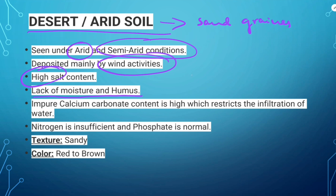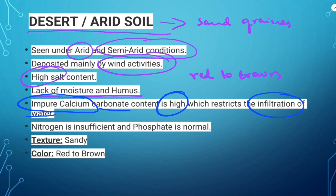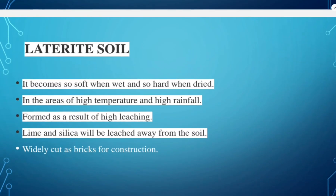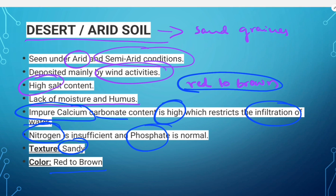The color of desert soil varies from red to brown. Impure calcium carbonate content is high, which restricts the infiltration of water. It has insufficient nitrogen and normal phosphate. Its texture is sandy. It is mainly developed in western Rajasthan, and semi-arid type in southern Punjab and Haryana.